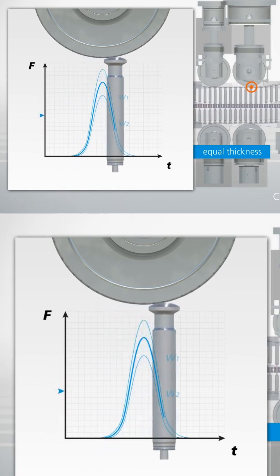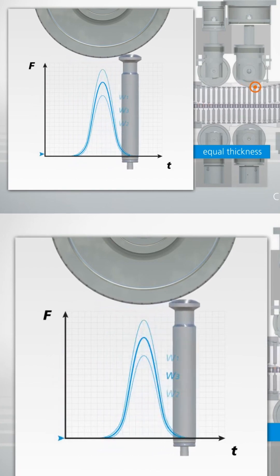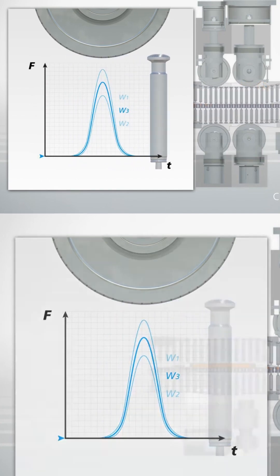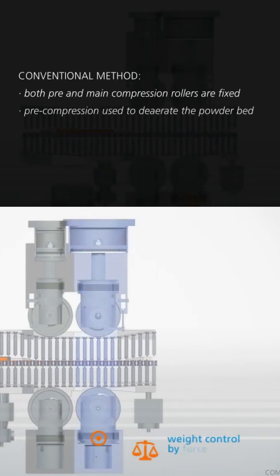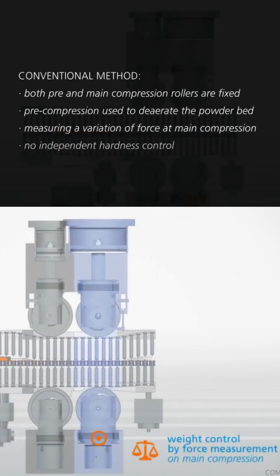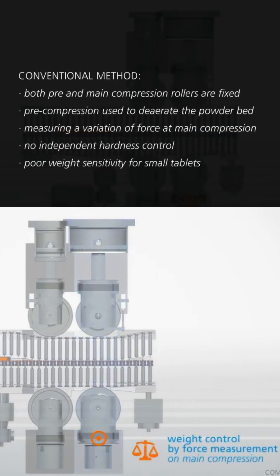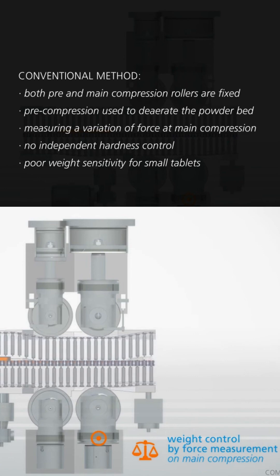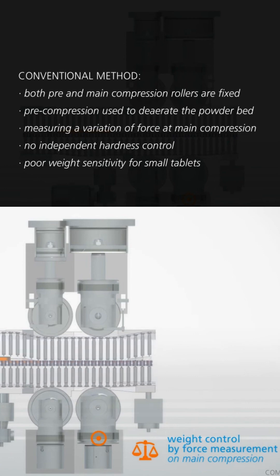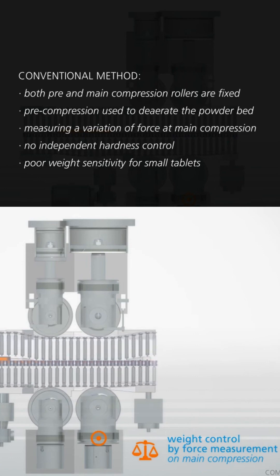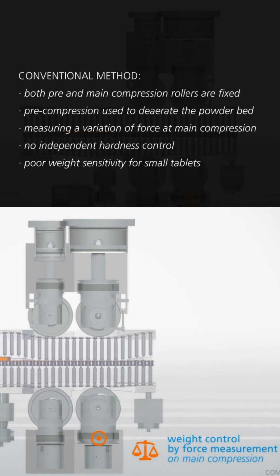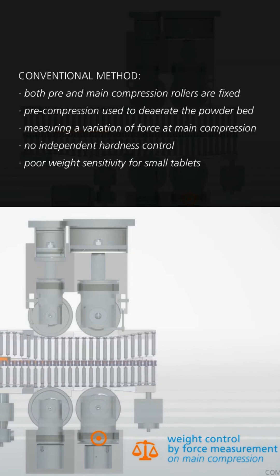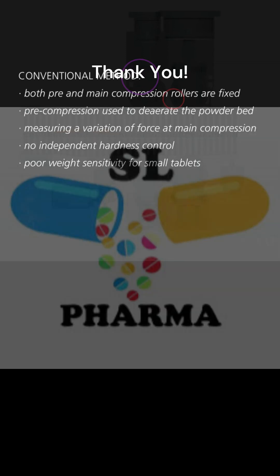At higher forces, this system has good sensitivity, whereas at lower forces it becomes less sensitive. Tablets that do not conform to the force and weight tolerances are rejected and diverted. This method only checks tablet weight, not tablet hardness.